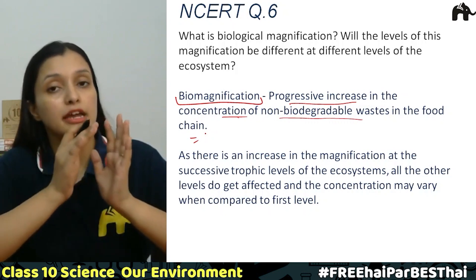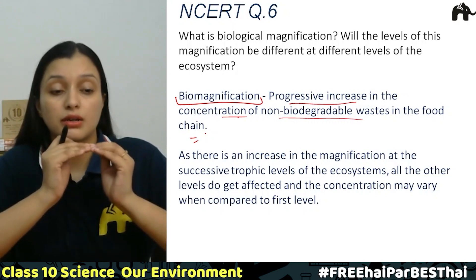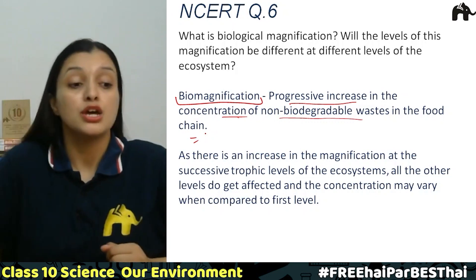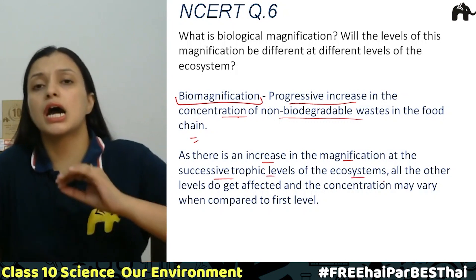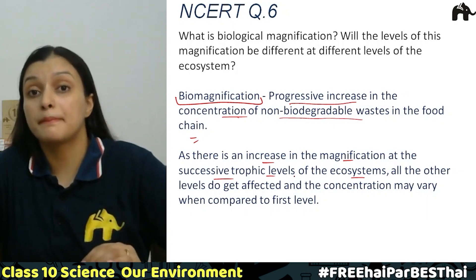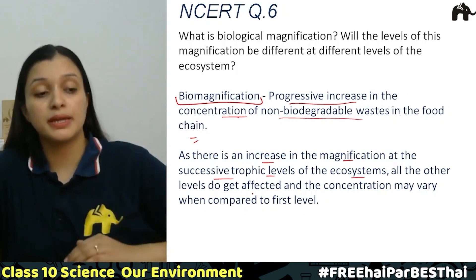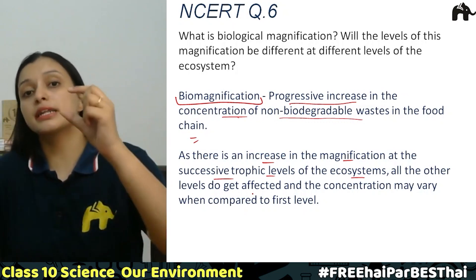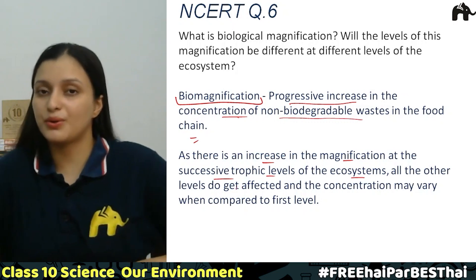अगर compare करें first trophic level से third trophic level तक — first level में non-biodegradable waste की concentration बहुत कम होगी और third level तक जाते-जाते वो बहुत ज़्यादा बढ़ चुकी होगी। As there is an increase in magnification at successive trophic levels of the ecosystem, all the other levels get affected, and the concentration may vary when compared with the first trophic level। तो जैसे-जैसे हम ऊपर जाते जाएंगे, biomagnification होती जाएगी और concentration बढ़ती जाएगी।